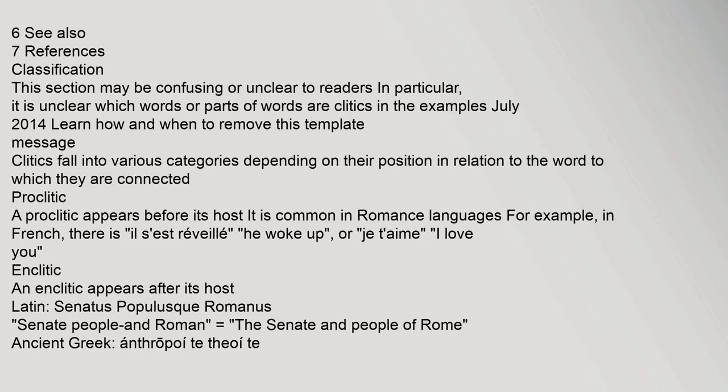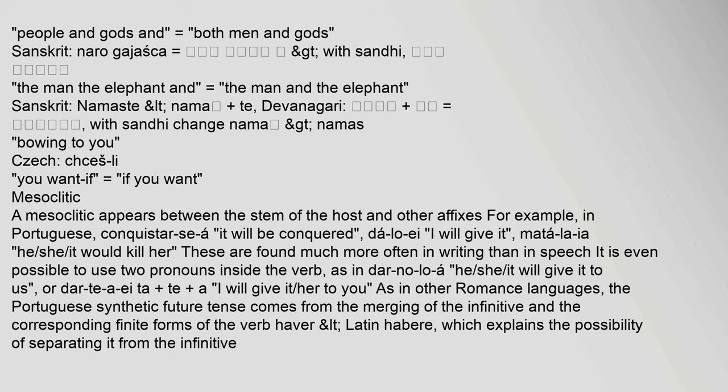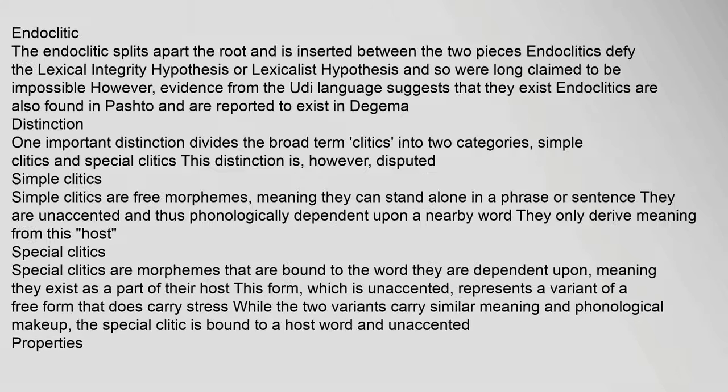An enclitic appears after its host. Latin: 'Senatus populusque Romanus' ('the senate and people of Rome'). Ancient Greek: 'anthropoi te theoi te' ('people and gods' / 'both men and gods'). Sanskrit: 'naro-gajas-ca'. The endoclitic splits apart the root and is inserted between the two pieces. Endoclitics defy the lexical integrity hypothesis, and evidence from the Udi language suggests that they exist. Endoclitics are also found in Pashto.